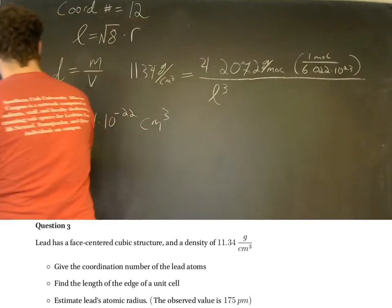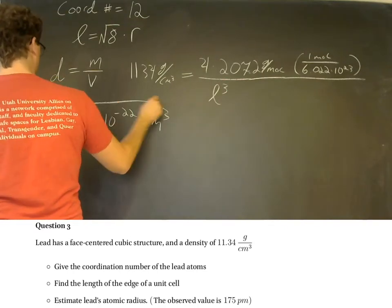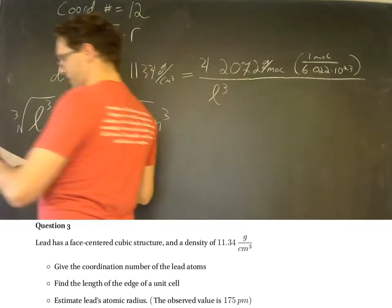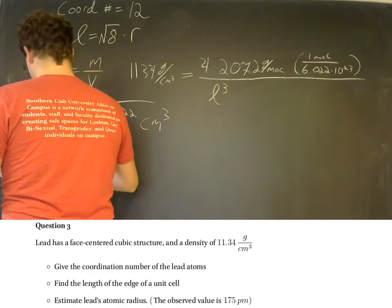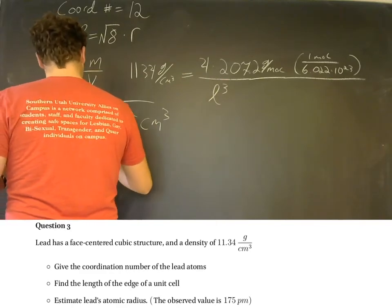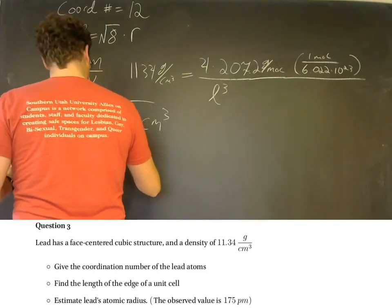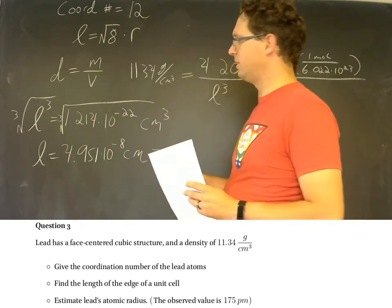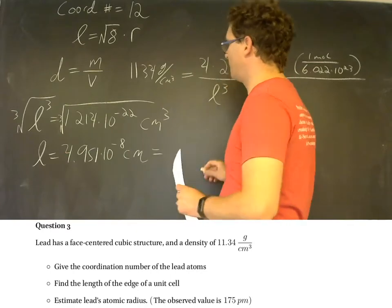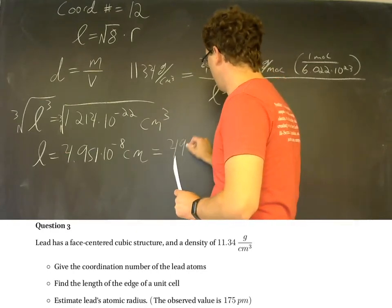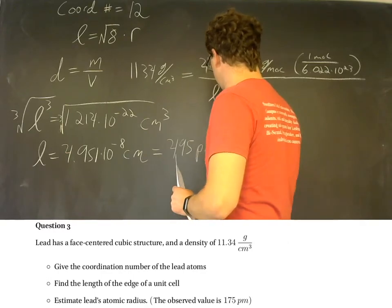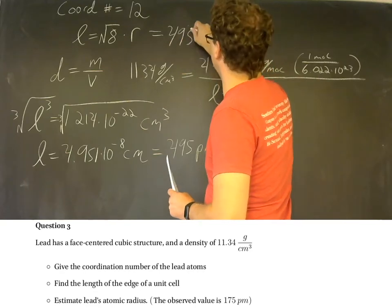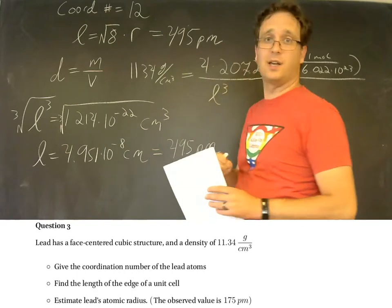We can cube root both sides now and we'll get the edge length itself and that's going to be 4.951 times 10 to the negative 8th centimeters. And we'll typically deal with picometers for atomic scales and so we'll change this into 4.495 picometers. That now we can kind of put the answer up here. 495 picometers is a unit cell's edge length.